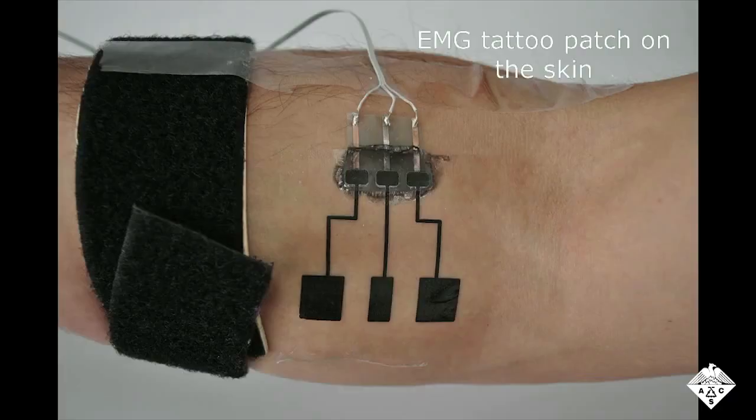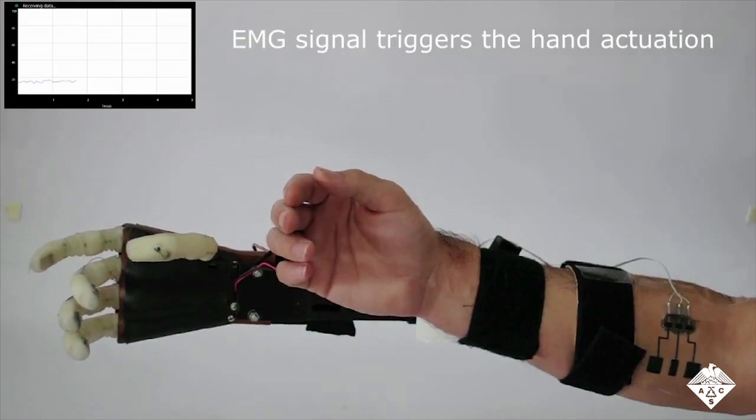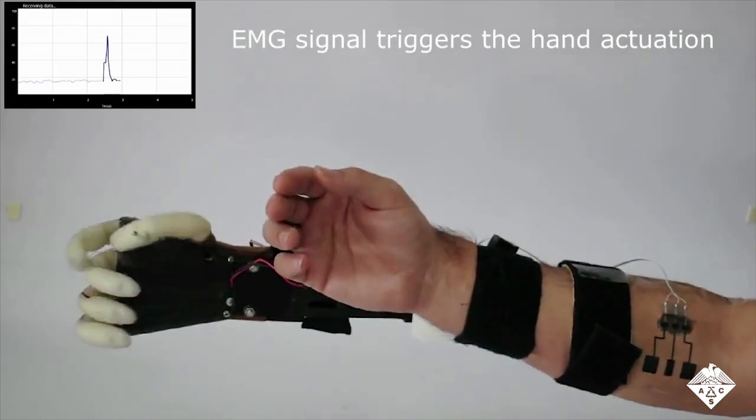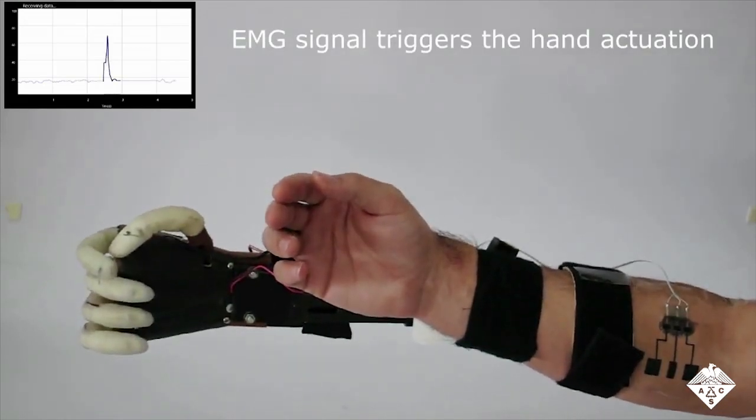The team demonstrated several applications of their new method. In one, they transferred a circuit to a volunteer's arm that allowed the person to control a robot prosthetic arm.